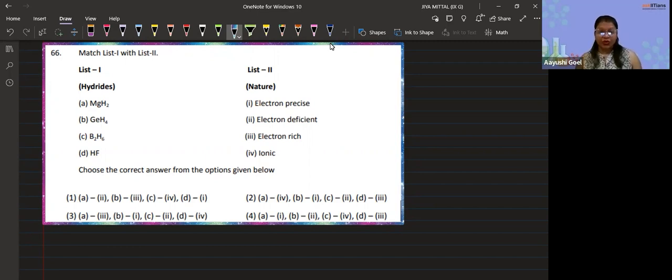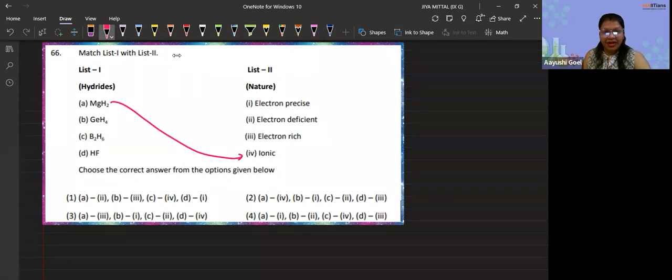By default, for making ionic species we require s-block elements, either group one or group two elements. That is only one I can see in the option: magnesium hydride. So by default, magnesium hydride is your ionic hydride. On doing this, I can see that there is only in the second list where A is combined with the fourth one, so this will be my answer. Now let's verify whether others are matching or not.